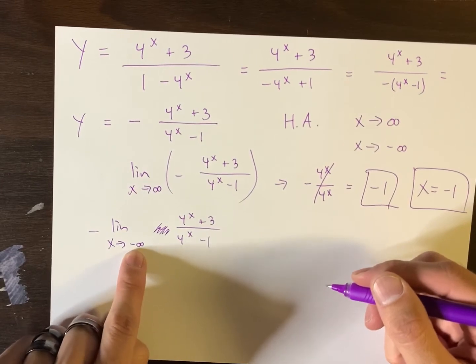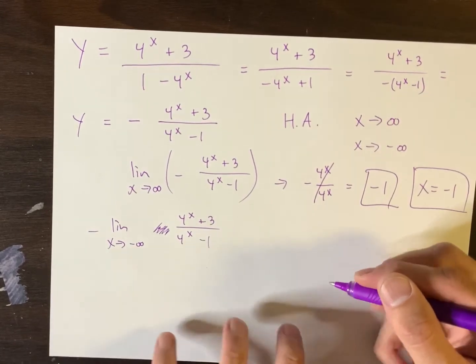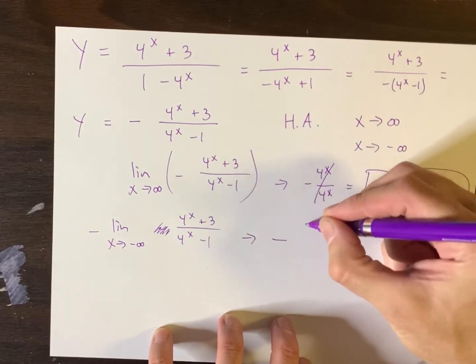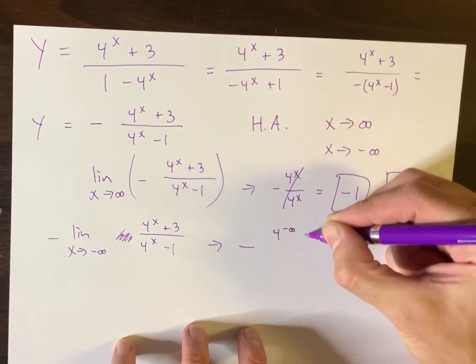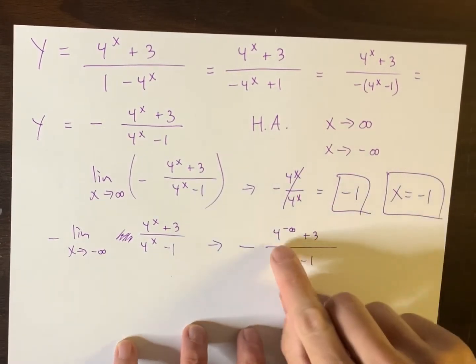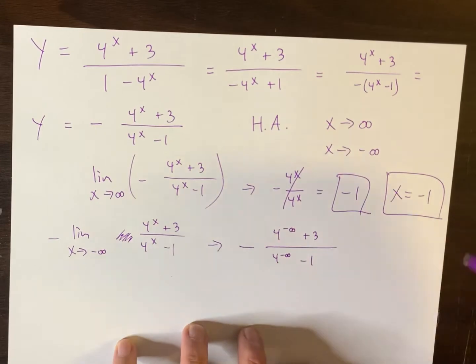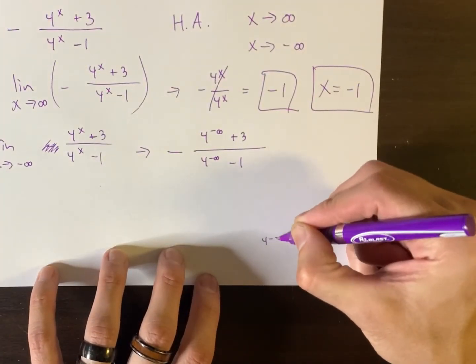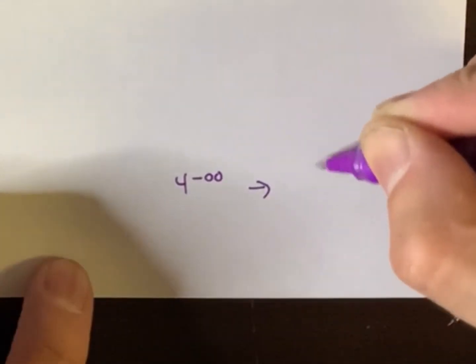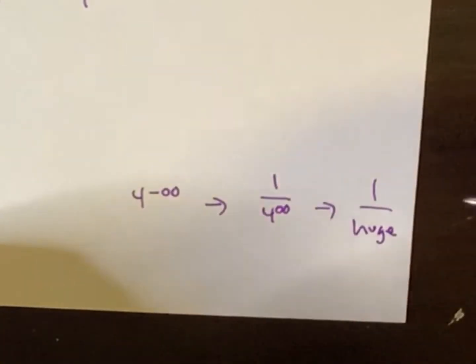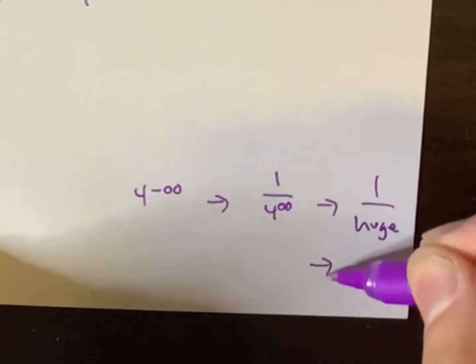So now let's see, we're sending X off to become a very deep negative. So what I'd essentially get is a negative and then I'd get four to the negative infinity plus three over four to the negative infinity minus one. Now what's four to the negative infinity? Well, let's see. Four to the negative infinity, that's one over four to the infinity, which is one over a huge number. If you have one over huge, that is essentially zero.